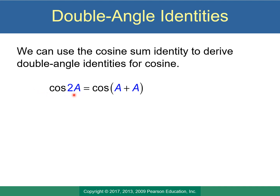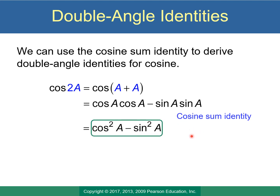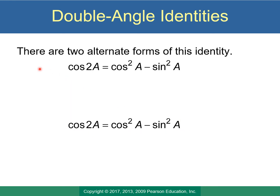Double angle just means the angle is the same but you're counting it twice — like 2a, 2b, or 2θ. So 2a is just the same as a plus a. This is exactly cosine of a sum of two angles, cosine of (a + a). Using our sum identity, everywhere we used to write B we just put a second a, then combine like terms — in this case you're just squaring. This gives us our first double angle identity for cosine.